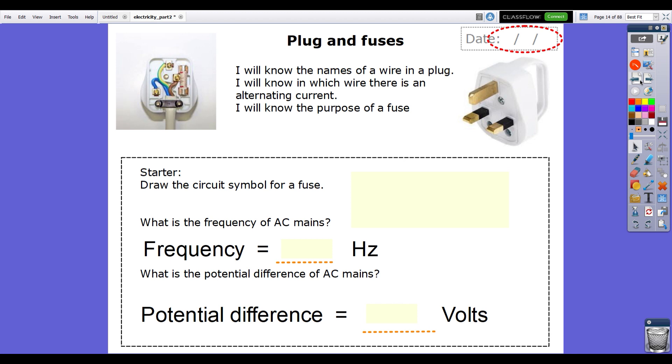First off, previous knowledge - have a go at this starter please. Once we've gone through the objectives: I will know the names of wires in a plug, I will know which wire has an alternating current, and I will know the purpose of a fuse. Have a go at the starter, click pause.